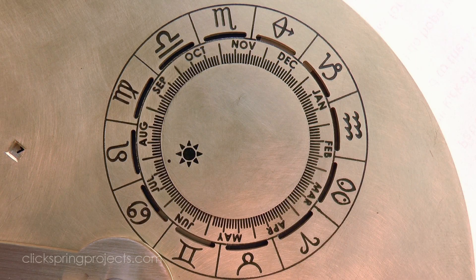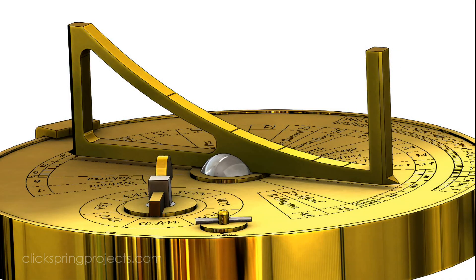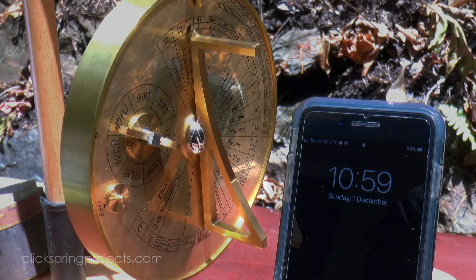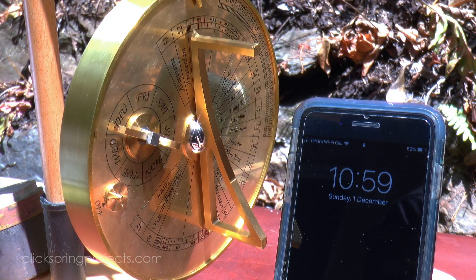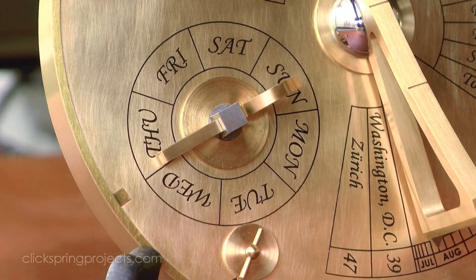The sundial part of the instrument is based on the now abandoned concept of unequal or temporal hours, where the daylight time before noon was divided into six hours, as was the time after, with the length of that hour changing throughout the year. Which is interesting enough on its own, as an indication of how the concept of time was managed in antiquity.